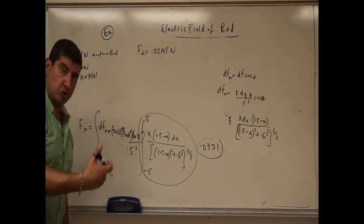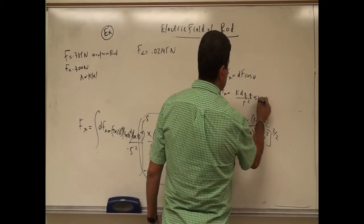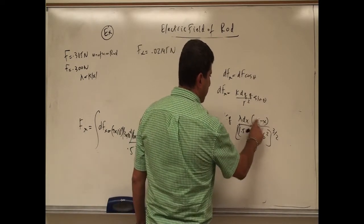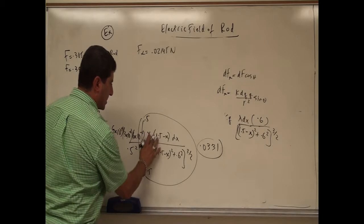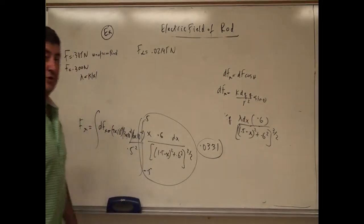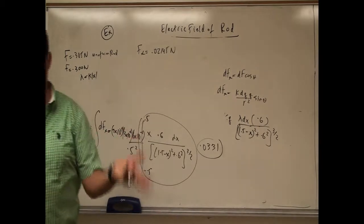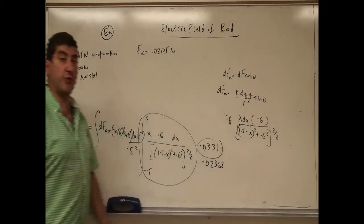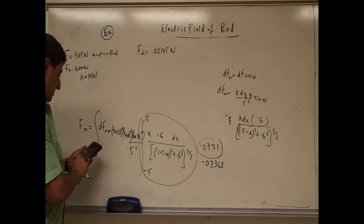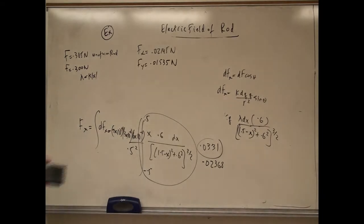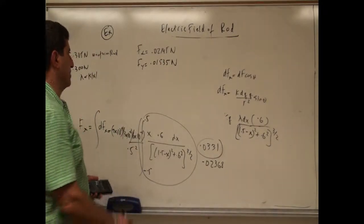That gives the force in the x direction due to the non-uniform charge rod. For the y direction, we change to sine theta — replacing (1.5 minus x) in the numerator with 0.6. Everything else stays the same, and we don't need to reintegrate for kappa. The fy integral comes out to 0.02368. Multiplying through and computing the angle using tangent inverse of fy over fx gives 30.6 degrees.